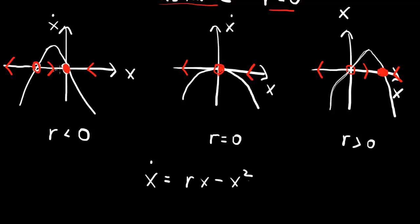Looking at this overall: for r negative, x equals zero is the stable fixed point. As r increases toward zero, the two fixed points come together at the bifurcation point. As r becomes positive, they separate again and there has been an exchange of stability — the x-equals-r fixed point becomes stable and x-equals-zero becomes unstable.